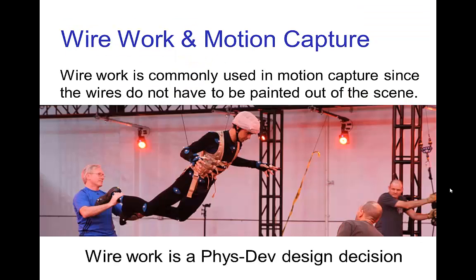This wire work is also commonly used in motion capture because it's even simpler in that with motion capture you don't have to paint out the wires in the scene as you do with live action. Wire work tends to distort the timing in jumps in that the characters spend much more time in the air than they would given the height of their jumps. But this is a vis dev design decision. In Crouching Tiger, Hidden Dragon, the idea is that the kung fu masters are able to essentially manipulate the laws of physics and that gives them a somewhat magical aspect.